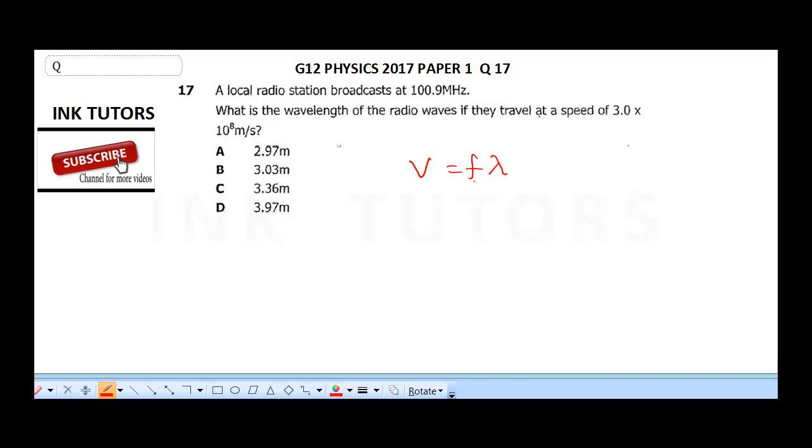So, the question says find the wavelength, therefore, lambda is going to be V over F. You're just punching your values, your V is 3 times 10 raised to power 8, and your frequency, it's giving us 100.9. Remember, this is in MHz, so you need to multiply by 10 raised to power 6.